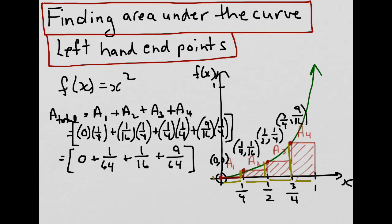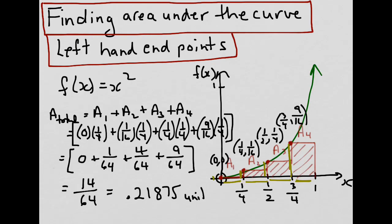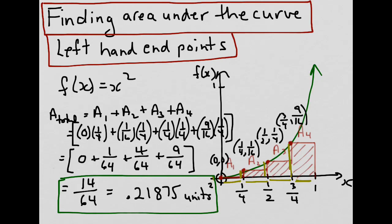To add these fractions we need a common denominator, which is 64. When we represent 1 sixteenth out of 64, we multiply 16 by 4 to get 64, so we multiply the top by 4 as well to give us 4 sixty-fourths as its equivalent fraction. Working this out, we get 1 plus 4 is 5 plus 9 is 14 sixty-fourths, which works out to be 0.21875 units squared. So our approximation of the area under the curve from x squared down to the x axis over the interval 0 to 1 using the left-hand endpoints is 0.21875 units squared, which, as we can see from the graph, is an underestimate of the actual area under the curve.